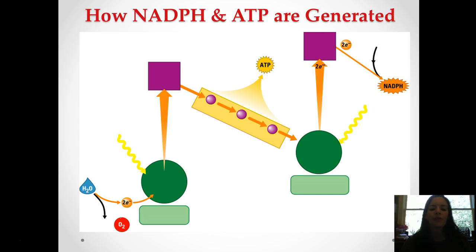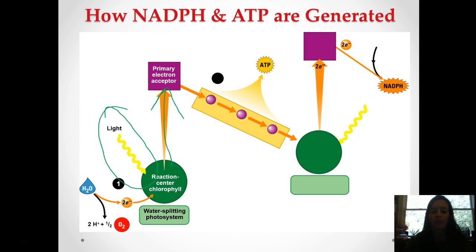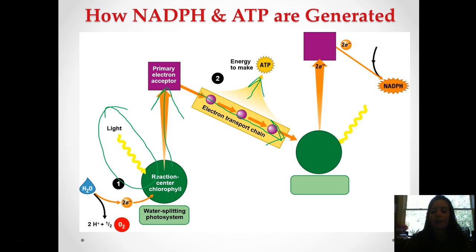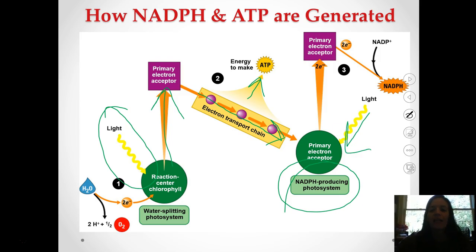Let's look at how those are generated. For step one, we have the water splitting — light comes in, it goes to that primary electron acceptor. Step two, you go through this electron transport chain, and this is going to make some ATP. Then step three, this is your NADPH-producing system — light is also coming in here, and this is where electrons get excited and produce NADPH.